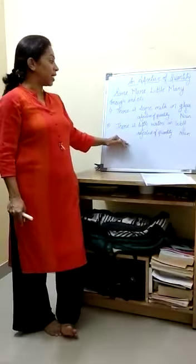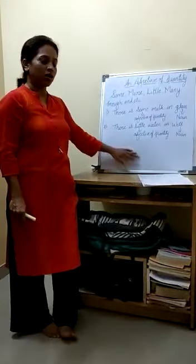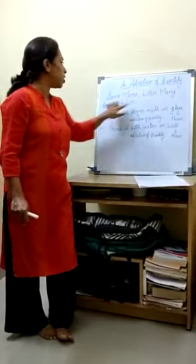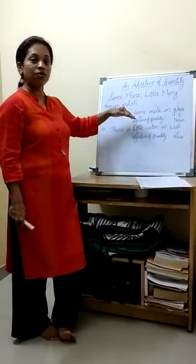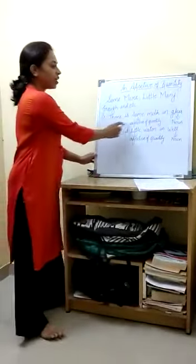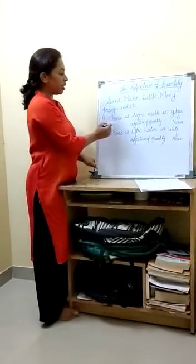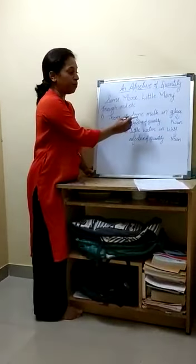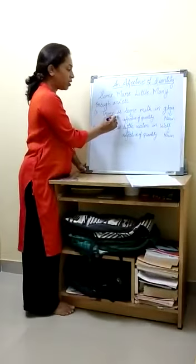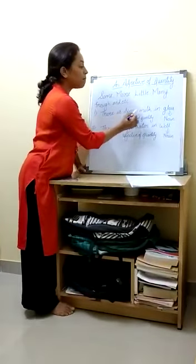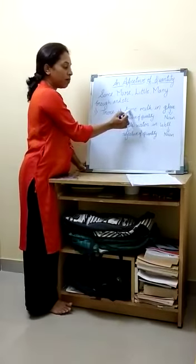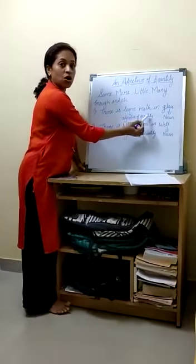So let us see the examples in the sentence. Some, more, little, many, enough — these are the adjectives of quantity which we use in our sentences. Our first example is: there is some milk in the glass. Here in this sentence, some is the adjective of quantity.